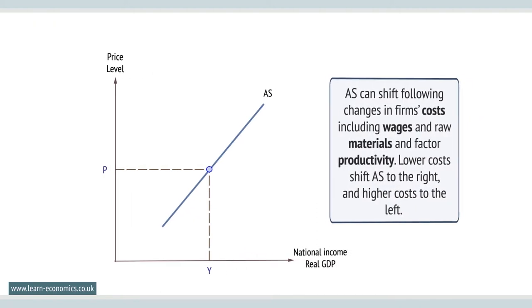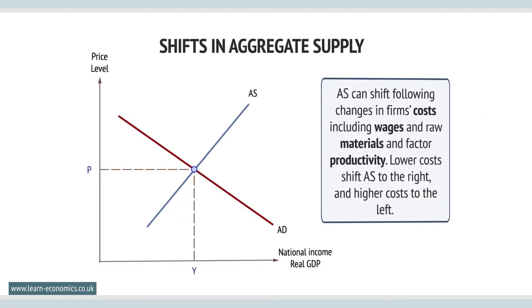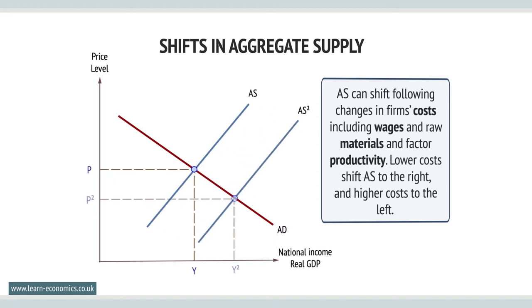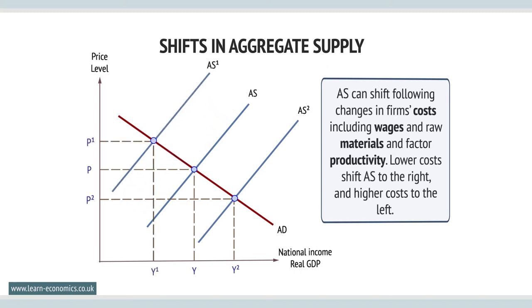AS can shift following changes in firms' costs, including wages and raw materials and factor productivity. Lower costs shift AS to the right and higher costs shift AS to the left.